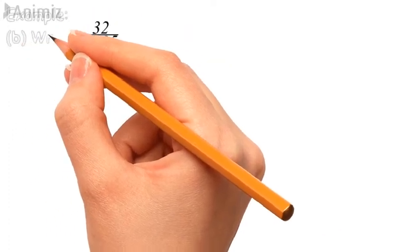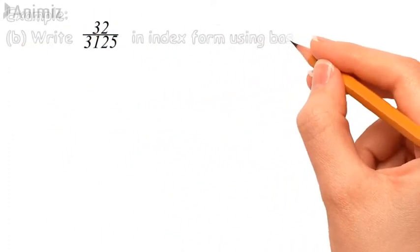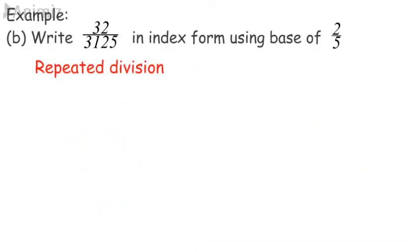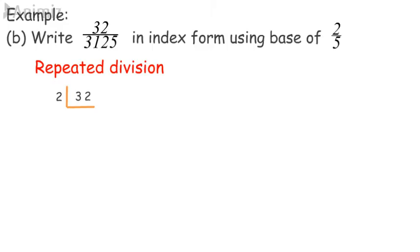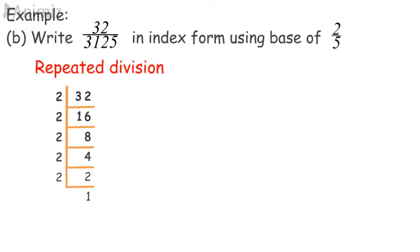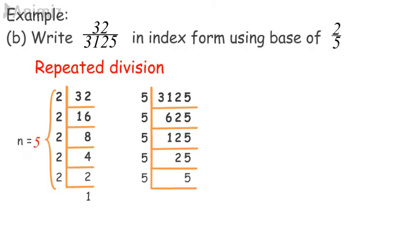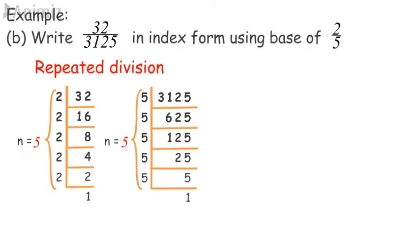Example B: write 32/3125 in index form using base 2/5. Using the repeated division method, divide the numerator: 32 ÷ 2 = 16, 16 ÷ 2 = 8, division continued until 1 is obtained — the number of divisions is 5. Divide the denominator: 3125 ÷ 5 = 625, 625 ÷ 5 = 125, division continued until 1 is obtained — the number of divisions is 5. Hence, 32/3125 = (2/5)^5.